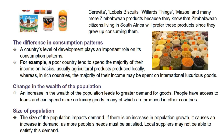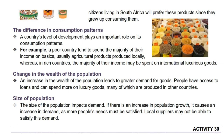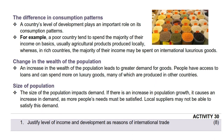The next reason is the difference in consumption patterns. A country's level of development plays an important role in its consumption patterns. For example, a poor country tends to spend the majority of their income on basics, usually agricultural products produced locally, whereas in rich countries, the majority of their income may be spent on international luxurious goods.